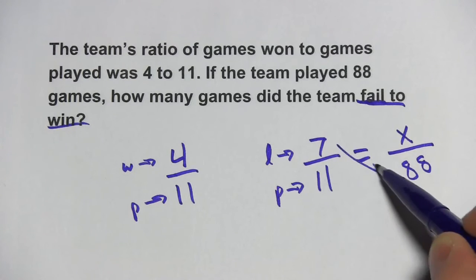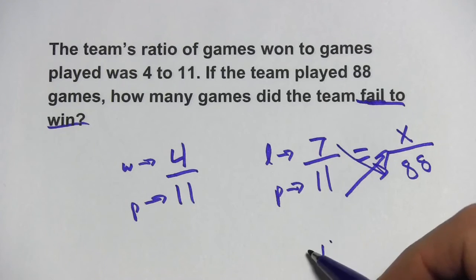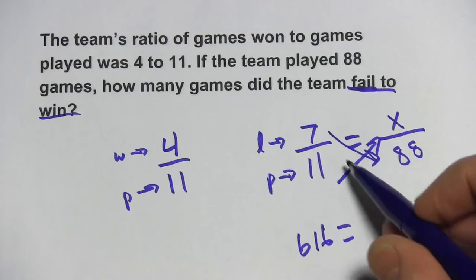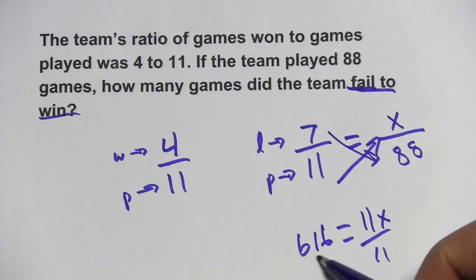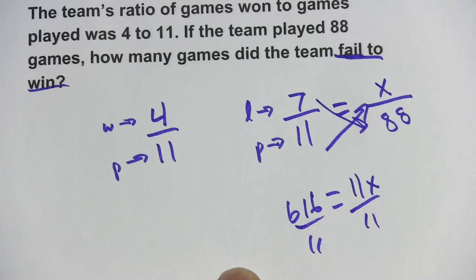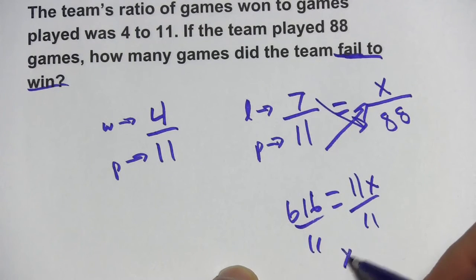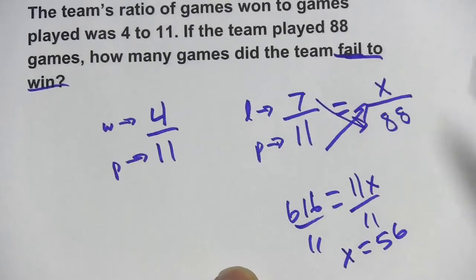Now I can go ahead and cross multiply. When I do that, I get 7 times 88, and that's 616, and I get 11 times x, 11x. And now I just need to divide both sides by 11, so 616 divided by 11 is 56. So the total number of games that the team failed to win or lost is 56.